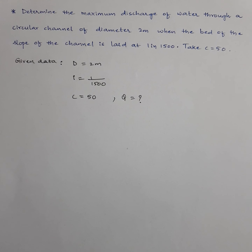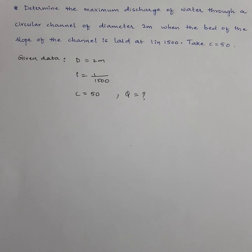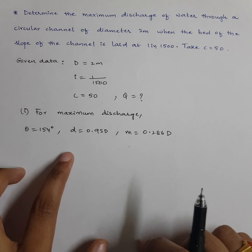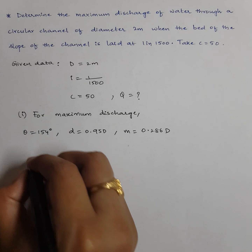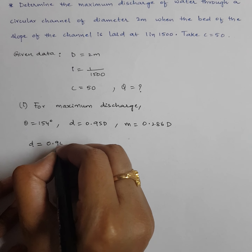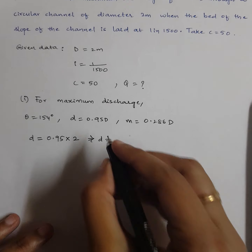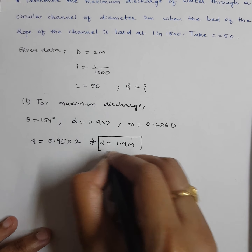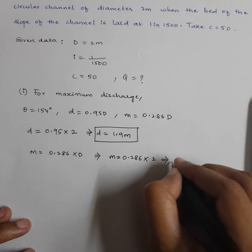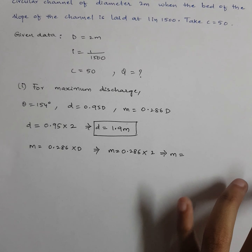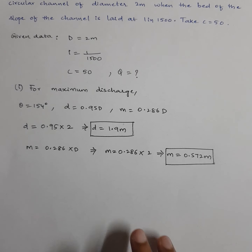For maximum discharge condition, the formulas to remember are: θ equals 154°, depth of flow d equals 0.95D, and M equals 0.286D. Calculating: d equals 0.95 into 2 equals 1.9 meters, and M equals 0.286 into 2 equals 0.572 meters.